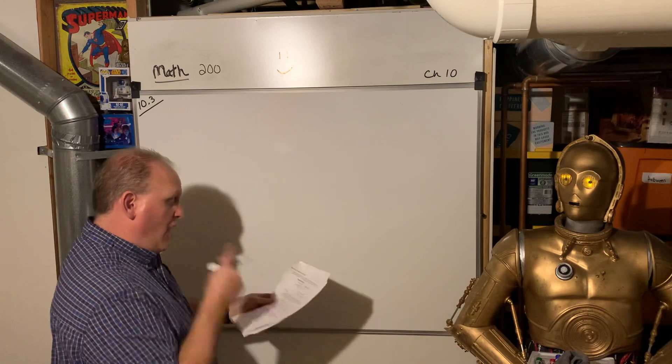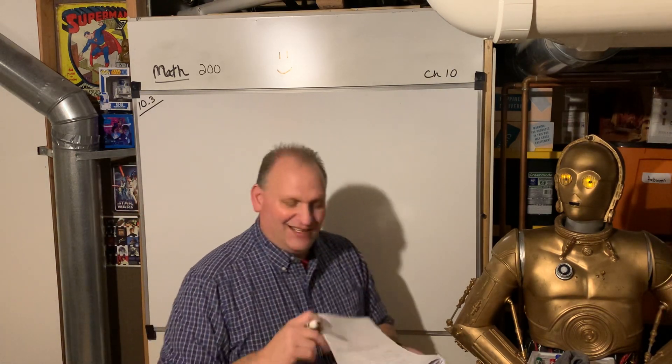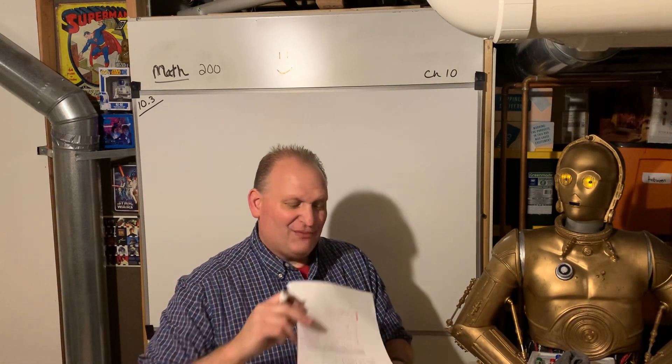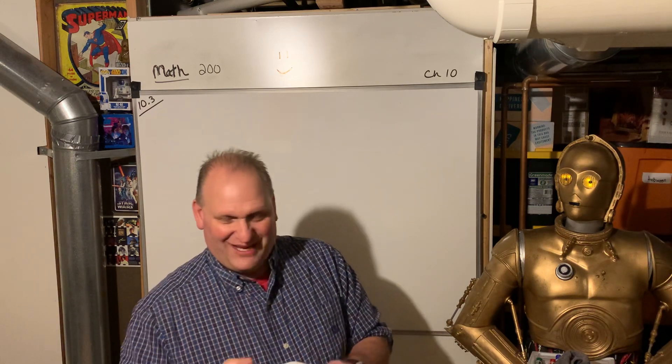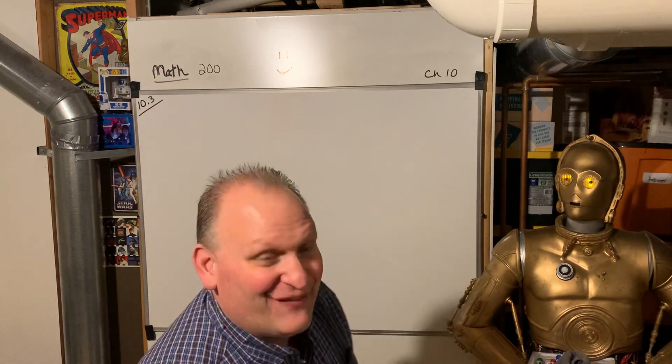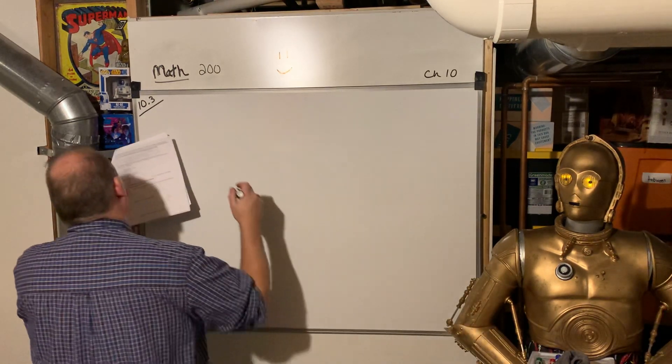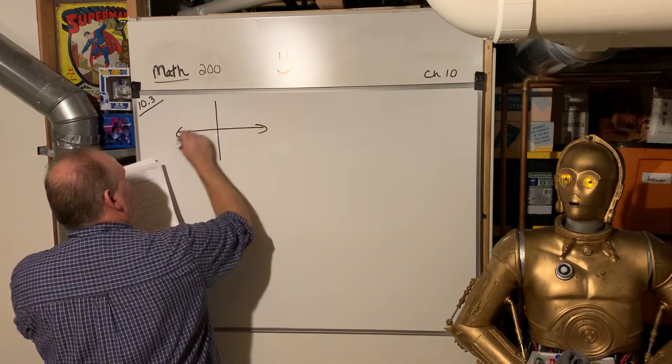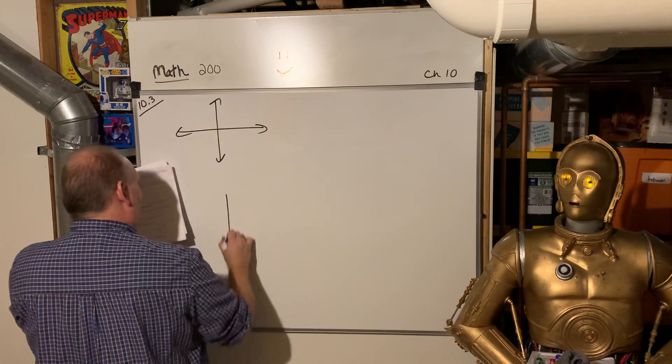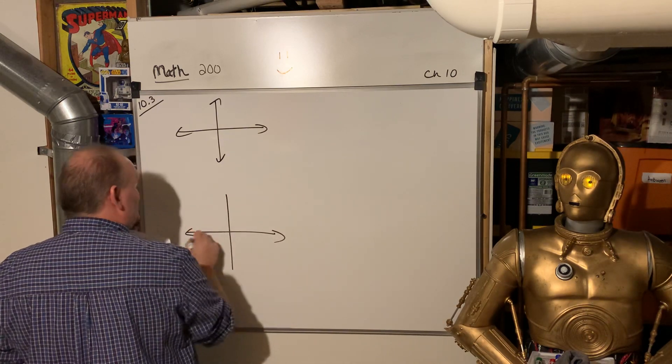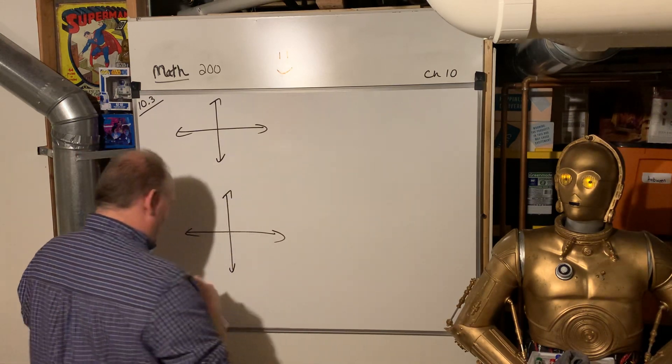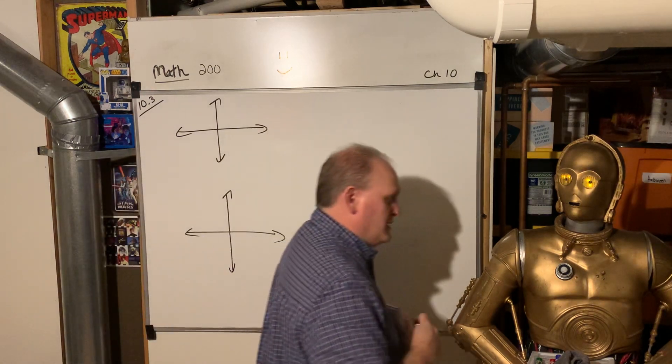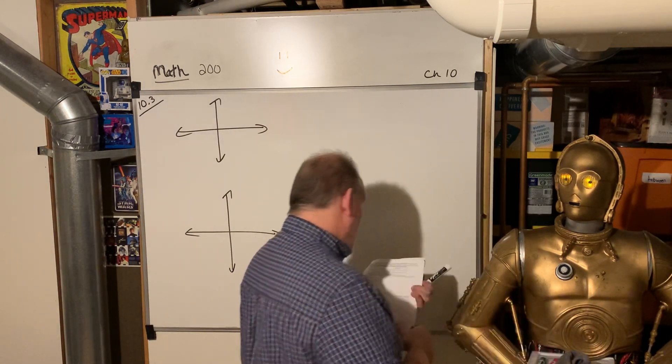They actually reference that in Superman 3. And then they reference, referencing Superman 3 in Office Space, which is a funny movie too. That was how they were going to scam the company was the plot from Superman 3. Not the new ones, the Christopher Reeve ones. All right. So now, what does logarithmic functions look like?